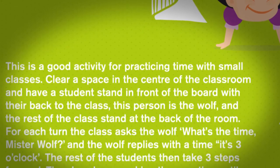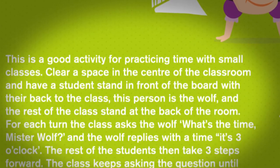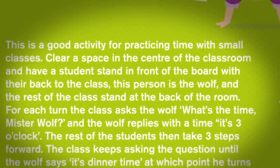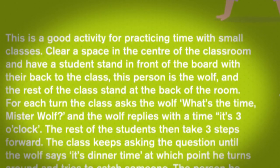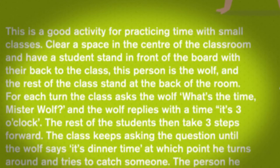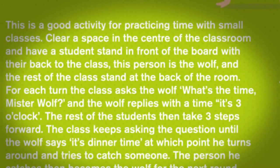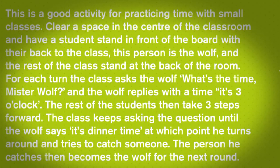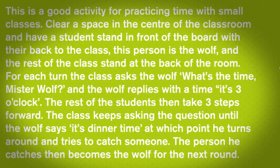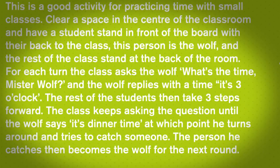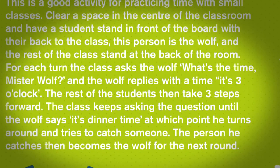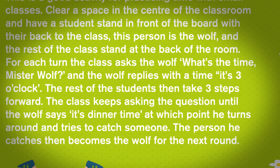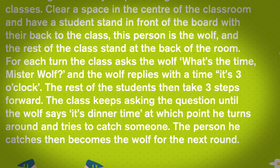The rest of the class stand at the back of the room. For each turn, the class asks the wolf, "What's the time, Mr. Wolf?" And the wolf replies with a time, for example, "It's 3 o'clock." The rest of the students then take three steps forward. The class keeps asking the question until the wolf says, "It's dinner time!" At which point, he turns around and tries to catch someone. The person he catches then becomes the wolf for the next round.